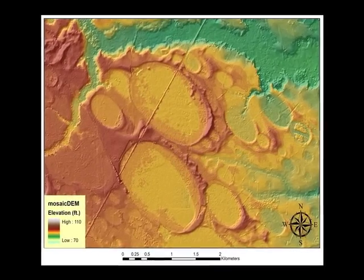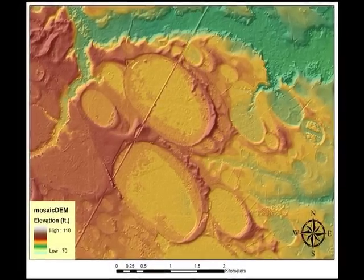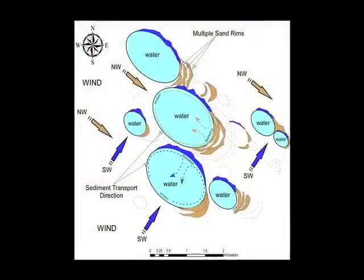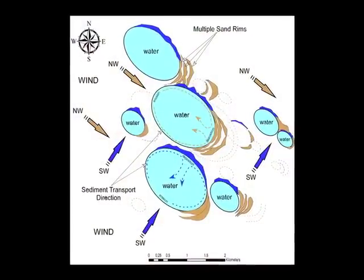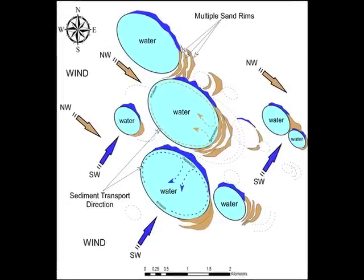The Carolina Bays are shallow upland ponds distributed from about north Florida through New Jersey. They were formed during the late Pleistocene under climatic conditions very different from present, from strong southwesterly winds that caused bay elongation perpendicular to the wind direction and down-drift shorelines and sand rims. The sand rims on the east side are the preferred locations of most human settlement.